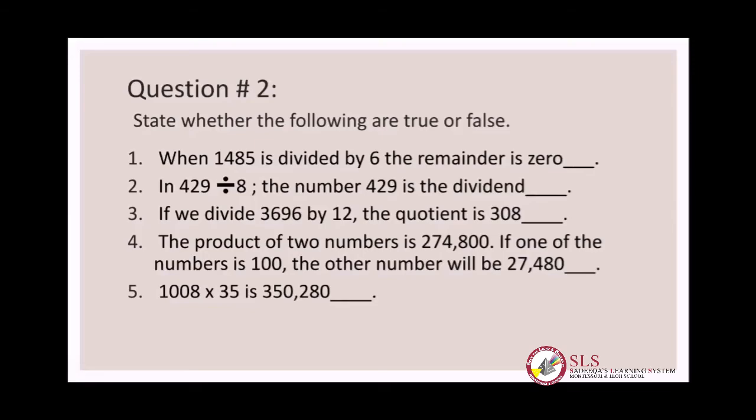Number four: the product of two numbers is two hundred and seventy-four thousand eight hundred. If one of the numbers is one hundred, the other number will be twenty-seven thousand four hundred and eighty. We multiply 27,480 by 100 — the product should have three zeros, but the answer only has two zeros, so it is false.